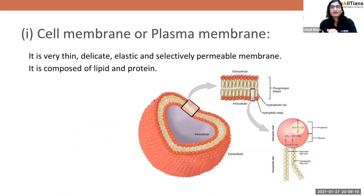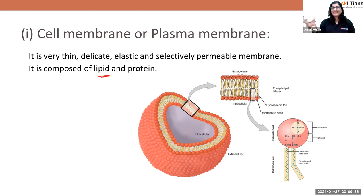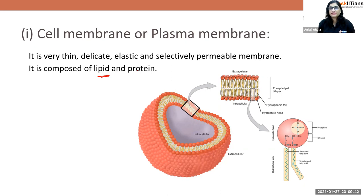The first thing we have to understand is the cell membrane or plasma membrane. This is a very thin, very delicate membrane that allows only certain — selective — material to pass through it. It is selectively permeable. It is made up of lipid — lipid belongs to the fat category — and protein. All molecules inside a cell are known as biomolecules because bio means life.